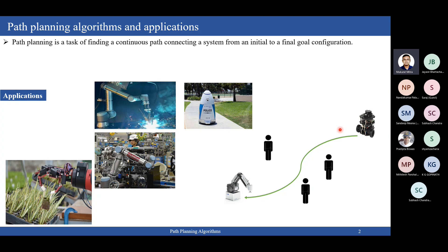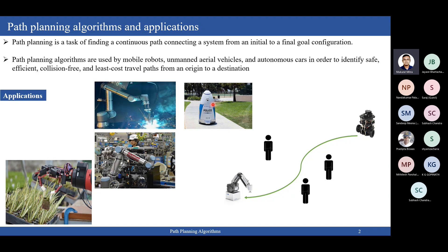There are coverage path planning algorithms where this definition slightly changes, but overall it remains the same. Coming to applications: this picture shows a UR5 robot used for building applications, a police robot used for security and surveillance, a robot used in manufacturing, and an agriculture robot. These are fixed-base robots and mobile robots. Robots are used in various applications, and in almost all applications, without path planning, robots cannot move from one place to another. Path planning algorithms are used by mobile robots, UAVs, and autonomous vehicles.